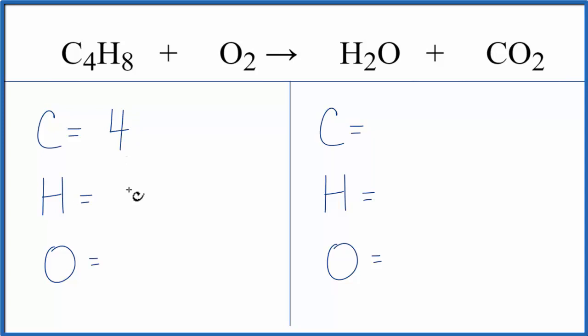Carbon 4, hydrogen 8, and then oxygen 2. On the product side, we have carbon 1, hydrogen 2, and then we have 1 oxygen here. But do be careful because we have 2 more in the carbon dioxide. So we have a total of 3 oxygens.